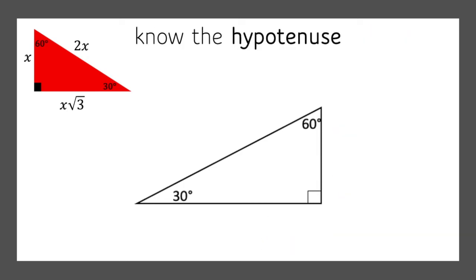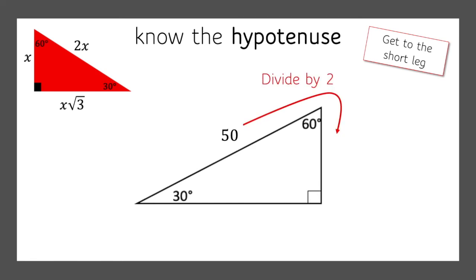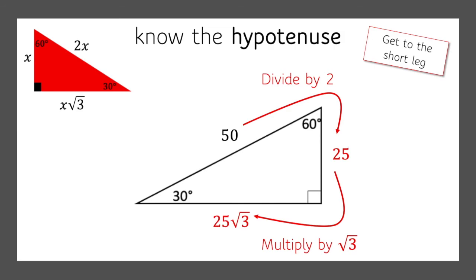Now what happens if we know the hypotenuse? Again, always just get to the short leg. So if we know the hypotenuse is 50, we'll reverse the process and divide by 2, so we get 25. From the short leg, we can multiply by the square root of 3 to get the long leg: 25 times the square root of 3.